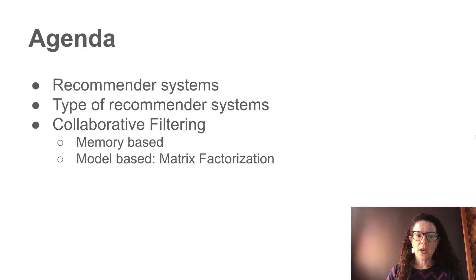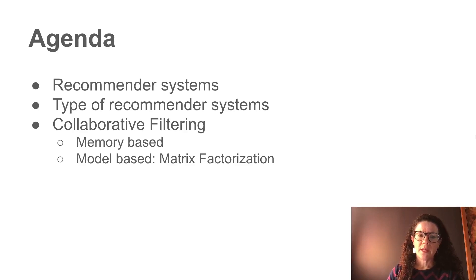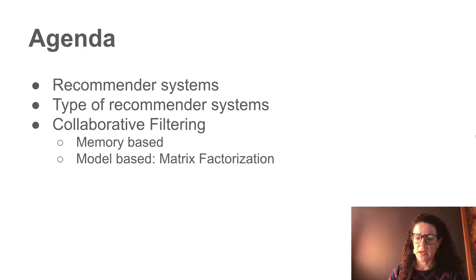Today I want to talk about recommender systems: the types of recommender systems out there, and in particular I want to dive into collaborative filtering. In collaborative filtering, we'll talk about two types of methods — memory-based collaborative filtering and model-based collaborative filtering, specifically matrix factorization models.